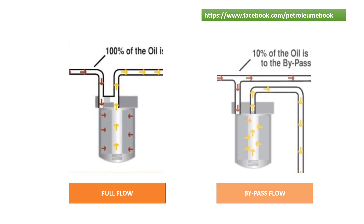Lube oil filters come in various types and sizes, depending on the specific application and requirements of the system. They can be designed as a bypass or full flow filter. A bypass filter filters only a small portion of the oil at a time, while a full flow filter filters all the oil that circulates through the system.